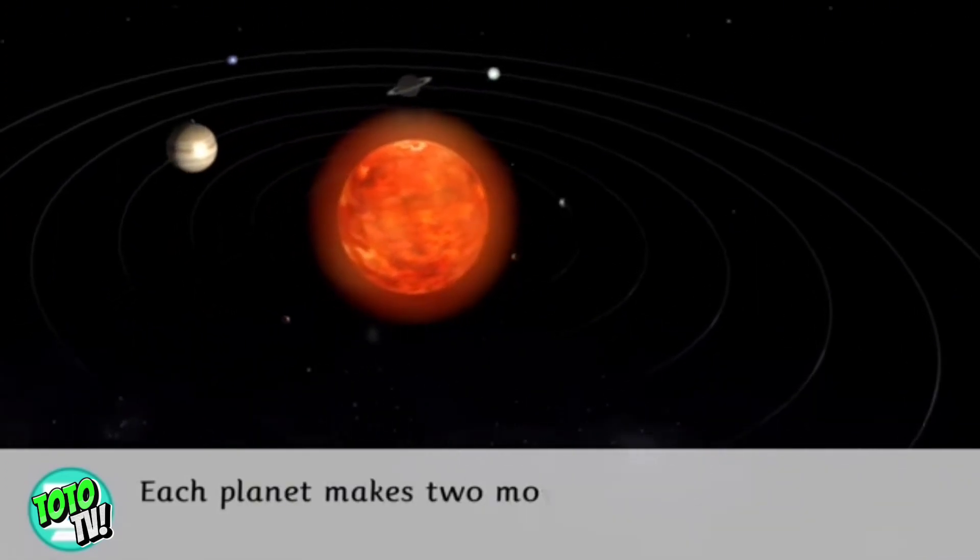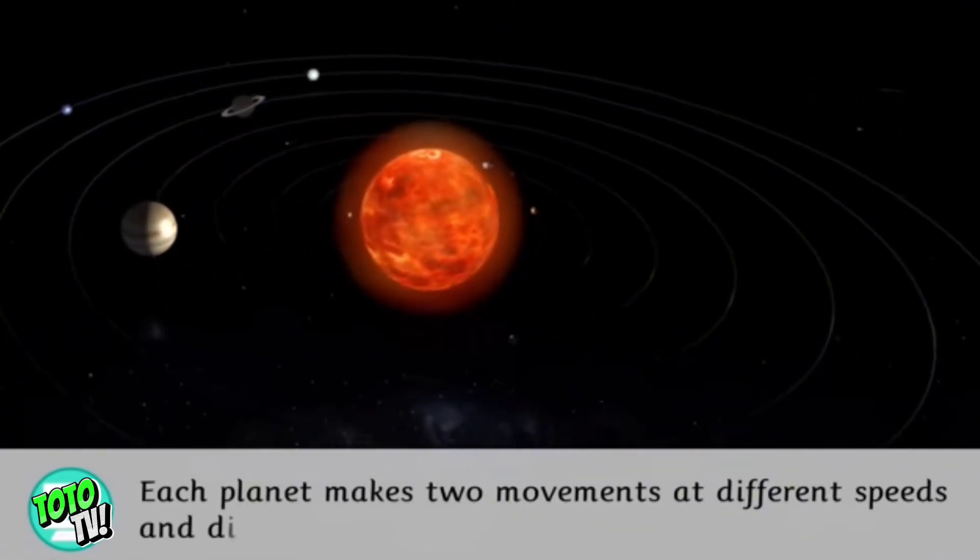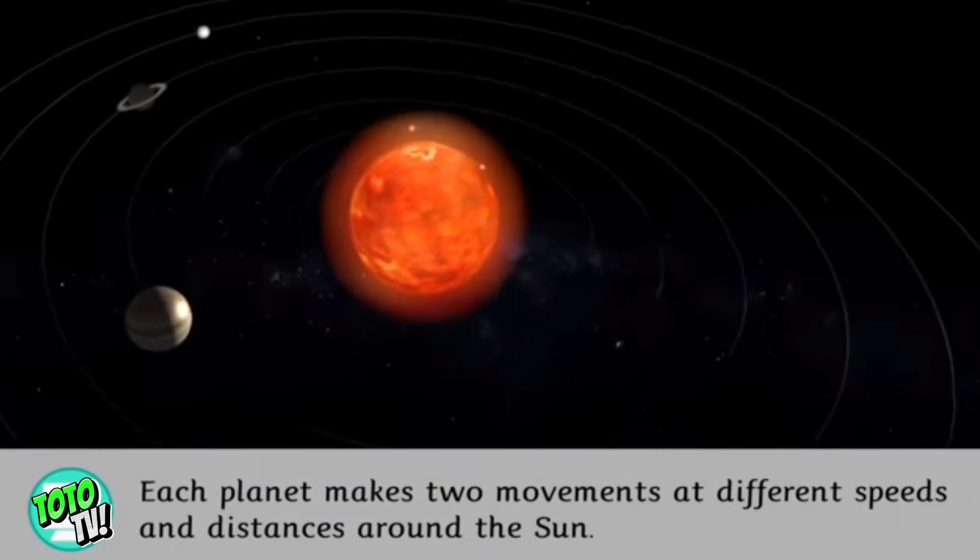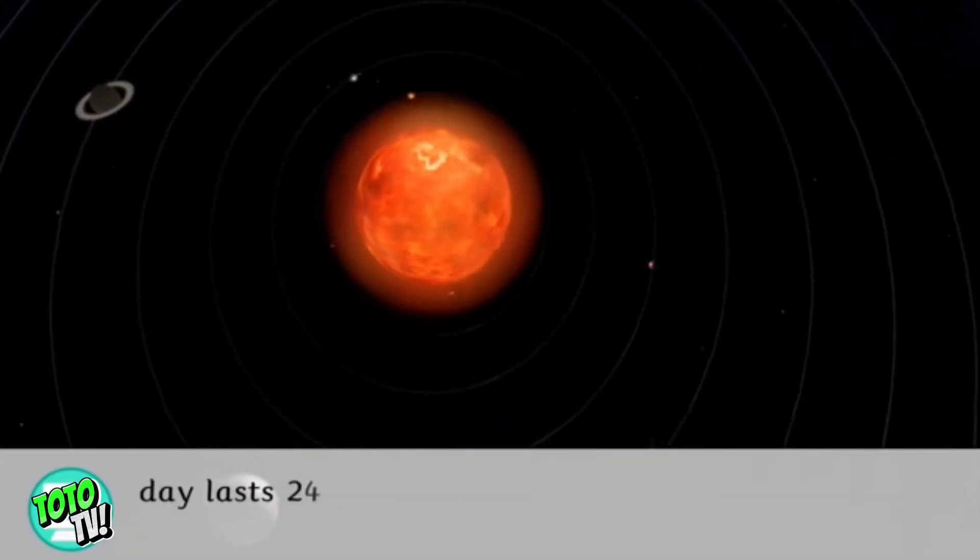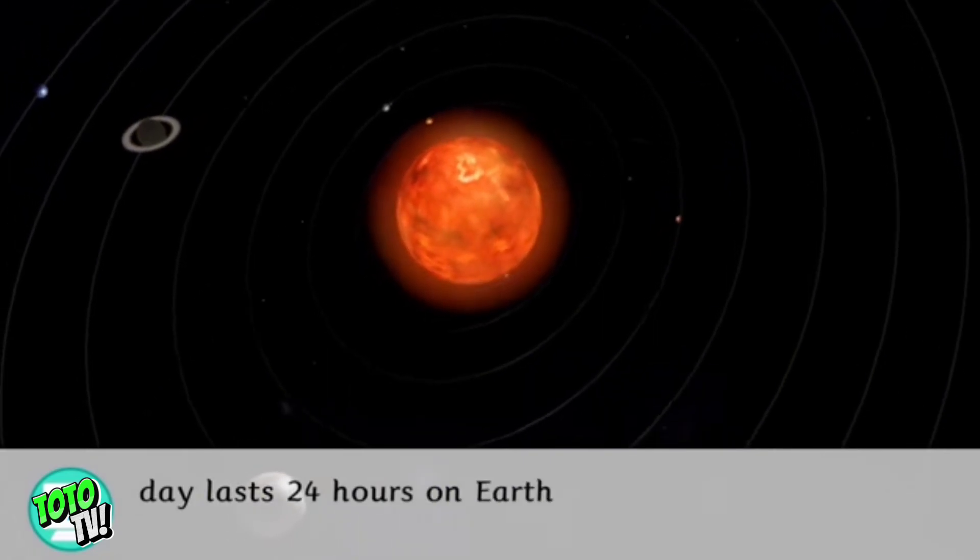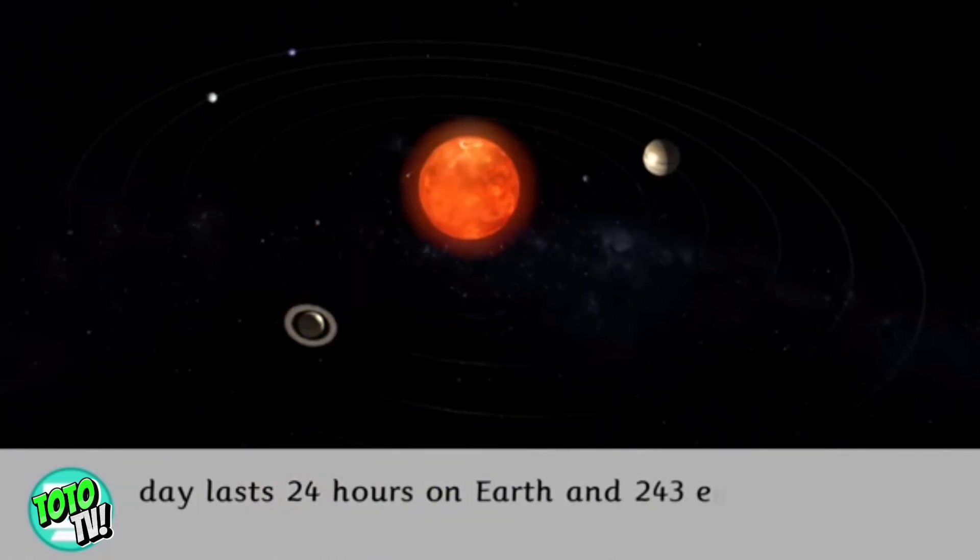Each planet makes two movements at different speeds and distances around the Sun. Because of this, a day lasts 24 hours on Earth and 243 earthly days on Venus.